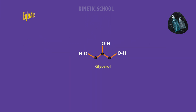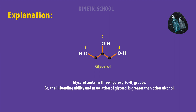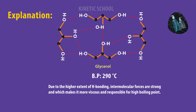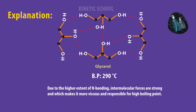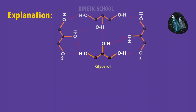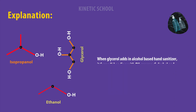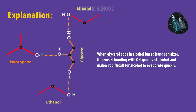But how? Glycerol contains three hydroxyl groups, so the hydrogen bonding ability and association of glycerol is greater than other alcohols. Due to the higher extent of hydrogen bonding, intermolecular forces are strong, which makes it more viscous and responsible for its high boiling point. When glycerol is added to an alcohol-based hand sanitizer, it forms hydrogen bonding with the hydroxyl groups of alcohol, making it difficult for alcohol to evaporate quickly.